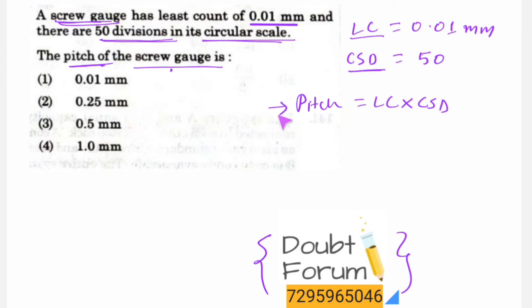The least count is 0.01 mm, and the circular scale division is 50. By multiplying these two, we get 0.5 mm as the pitch of the screw gauge. So answer C is the right answer. Thank you for watching this video.